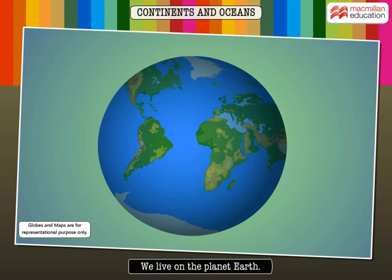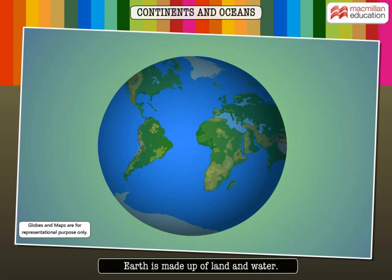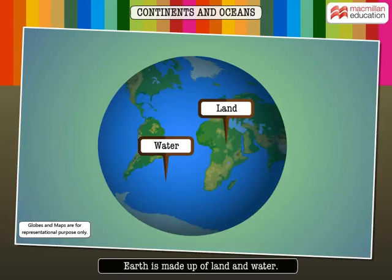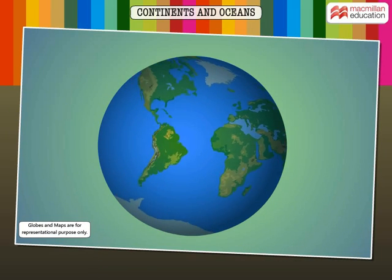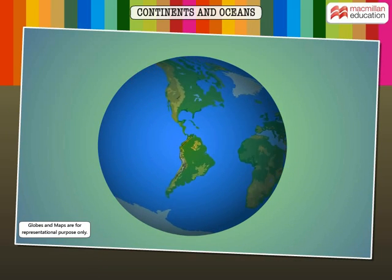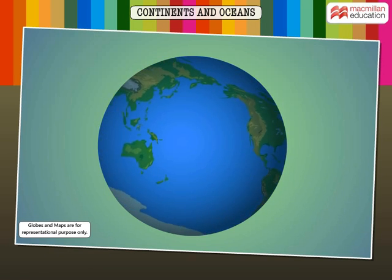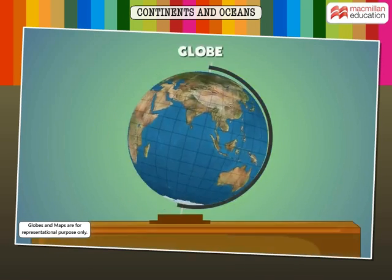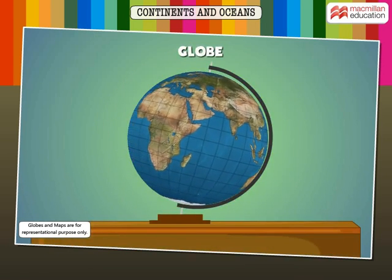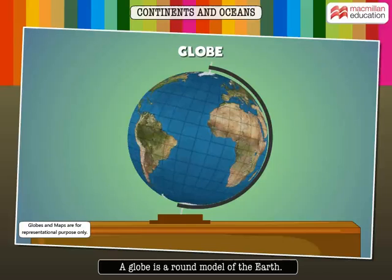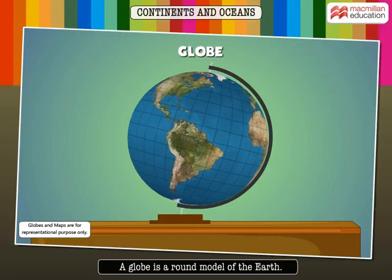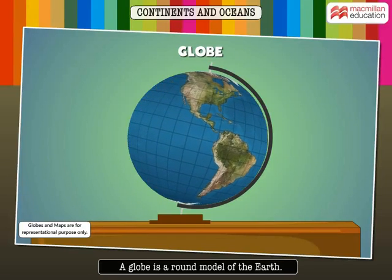We live on the planet Earth. It is made up of land and water. We get an idea about land and water distribution on the Earth by looking at a globe. A globe is a round model of the Earth.